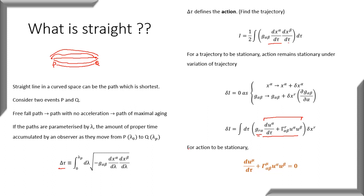The geodesic gives us a notion of the straight line in curved space, and this is the trajectory of extremal aging. A straight line can actually be a curved line. Any line with no acceleration, with maximal aging, along which a freely falling body moves — that is what is straight. Not a line drawn on paper, but the path of a freely falling body.